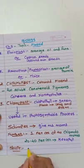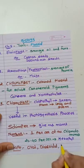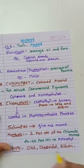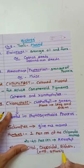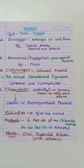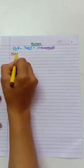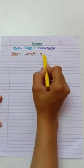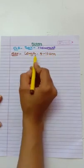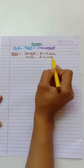In shape, various shapes are present, like oval shape, discoidal shape, ribbon shape, lens shape, and spherical shape. The size, shape, and numbers are various and differ from cell to cell. Size is also variable: length is 5 to 10 micrometers and width is 2 to 4 micrometers.